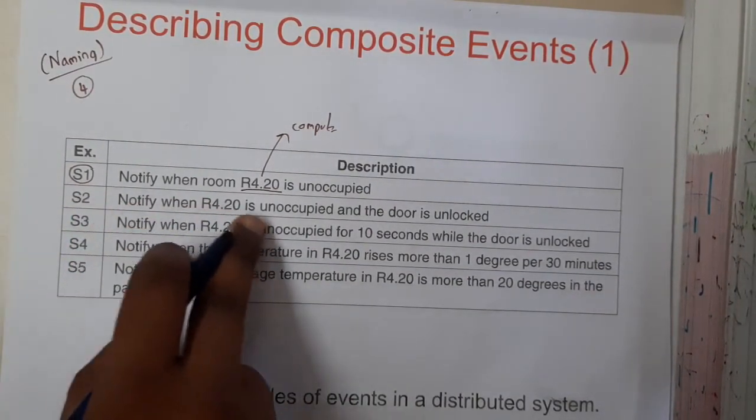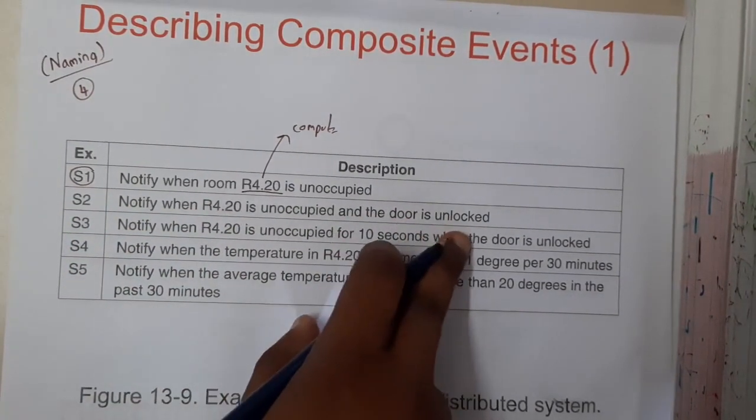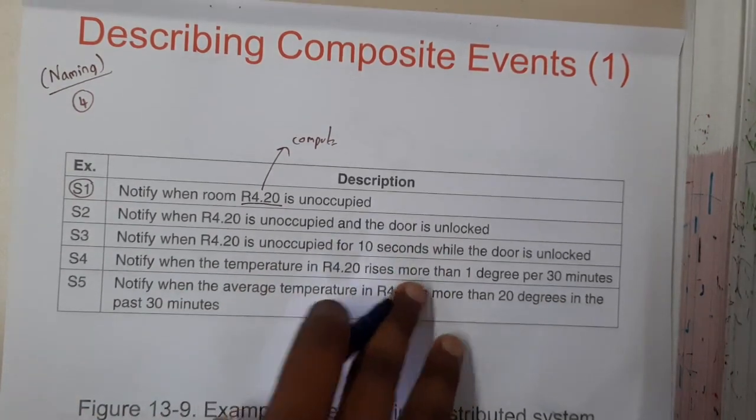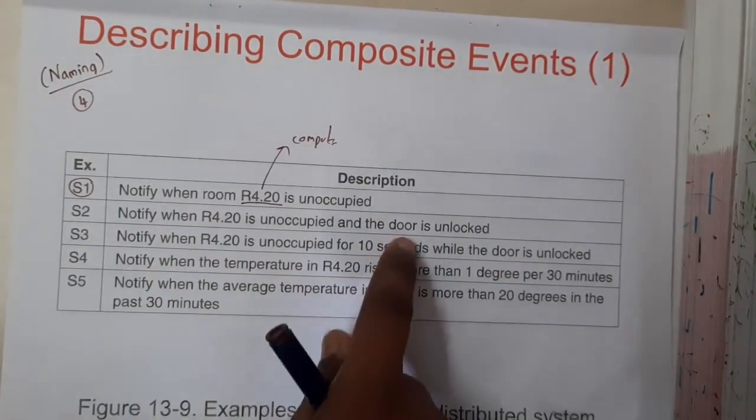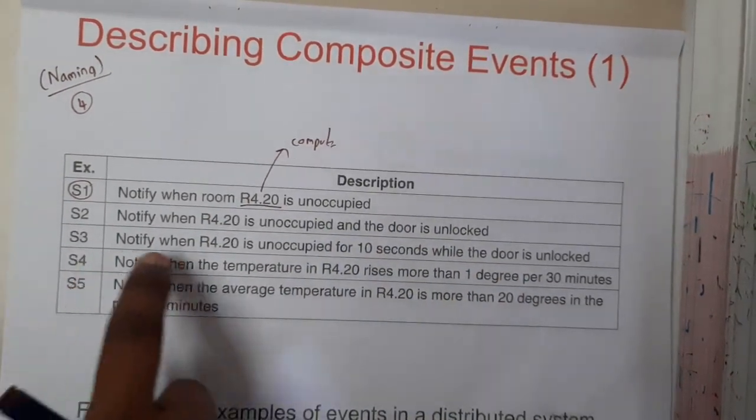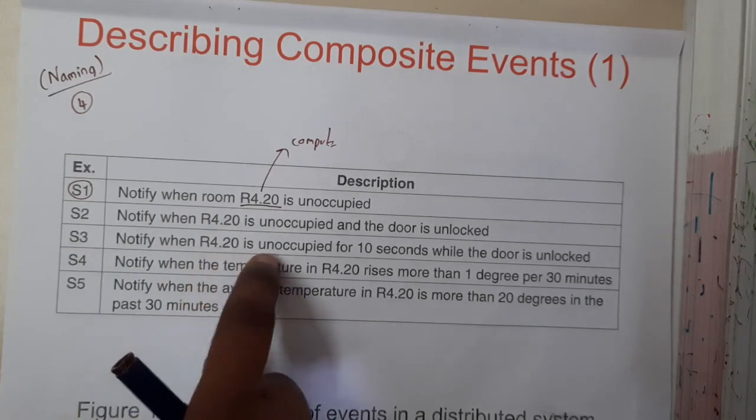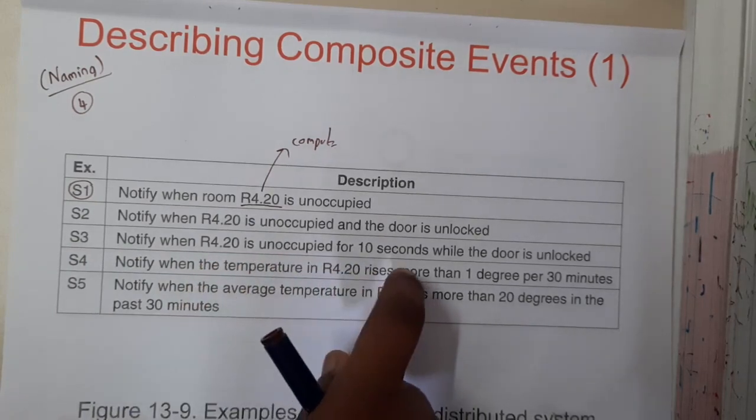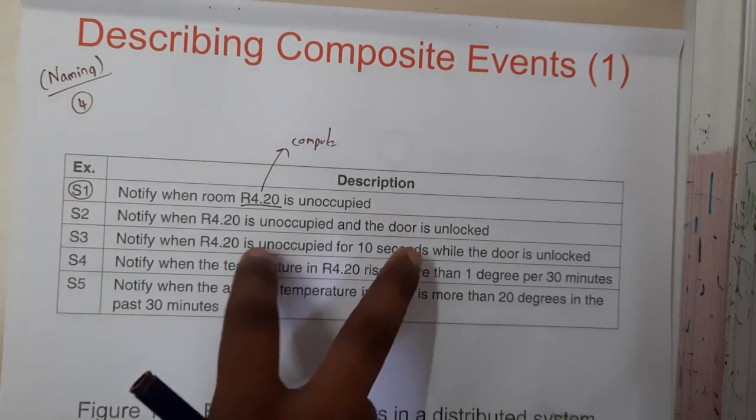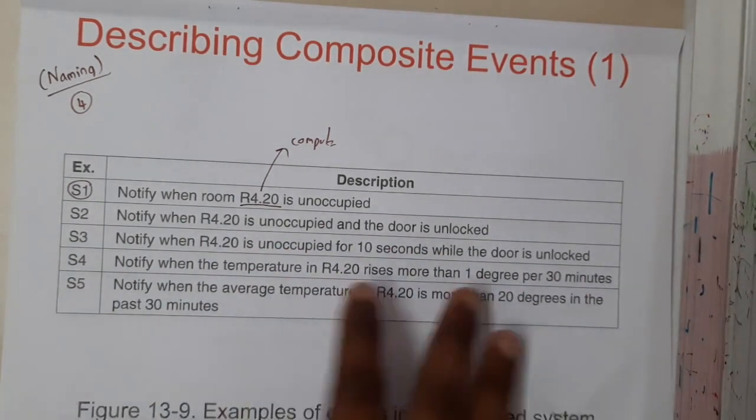Similarly with S2, we are notifying it is unoccupied and the door is unlocked, so basically the door is not locked, someone can enter inside. Similarly, S3 notifying when R4.20 is unoccupied for 10 seconds while the door is unlocked, so something could have happened.